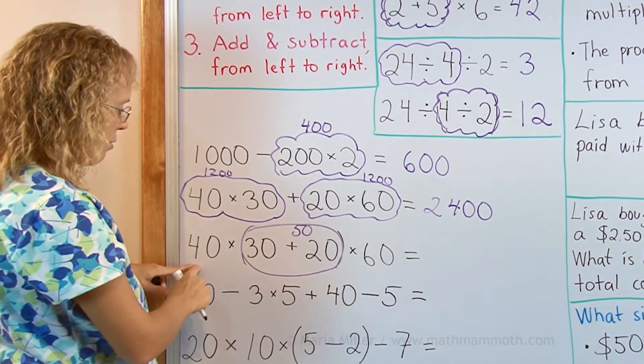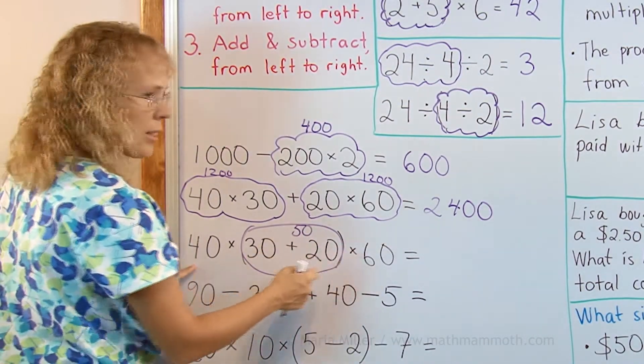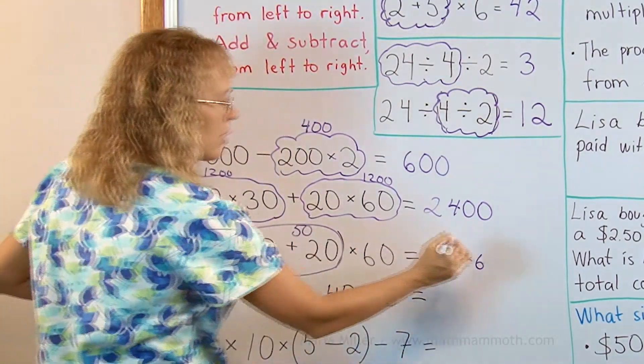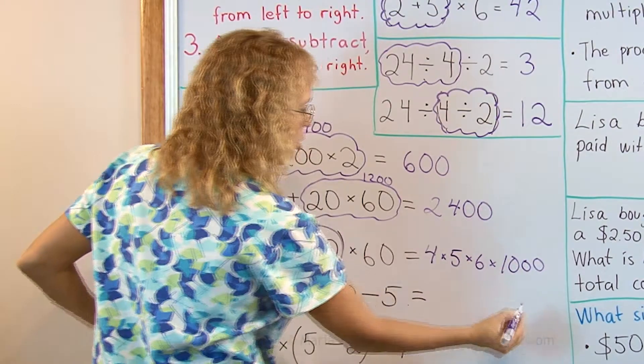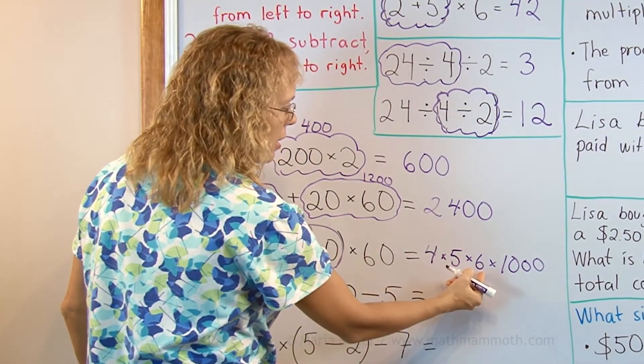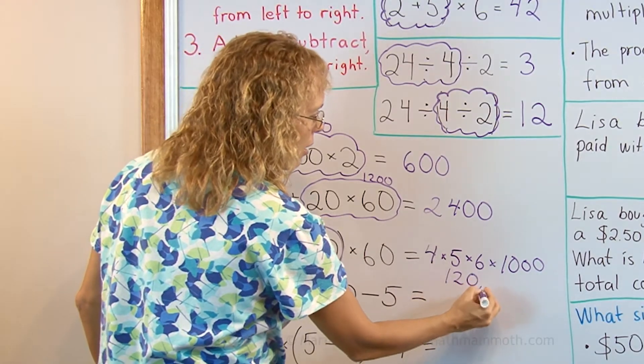Or let me do it this way. 4 times 5 times 6 and then tag zeros. Then I would have 3 zeros to tag to it, or times 1000. This is 20 times 6, 120, and 1000.